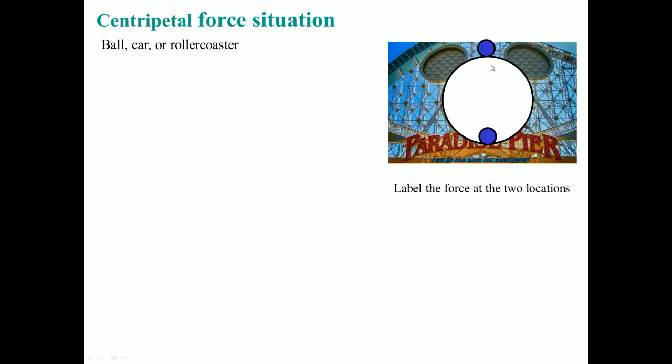What I would like you to do is label the forces at the two locations. At the bottom, the force of gravity is going down and the normal force is pointing inwards. The normal force is longer because it is what keeps the object going in the circle. If the normal force wasn't longer, the object would not revolve around the circle.